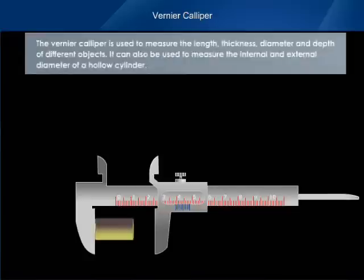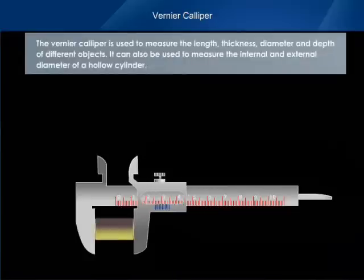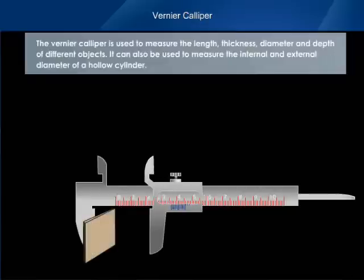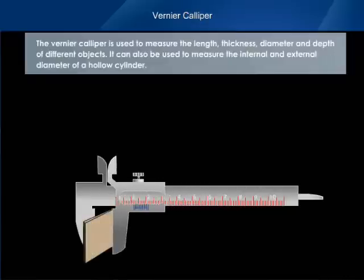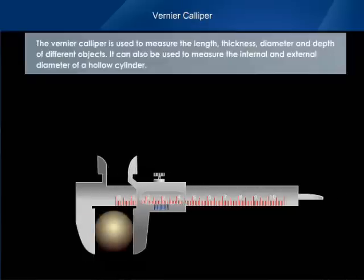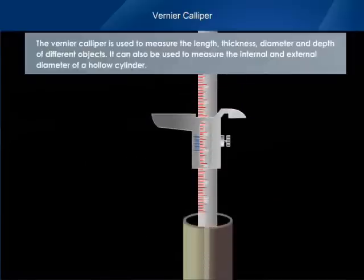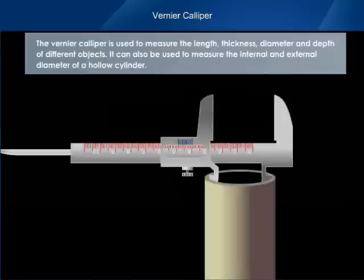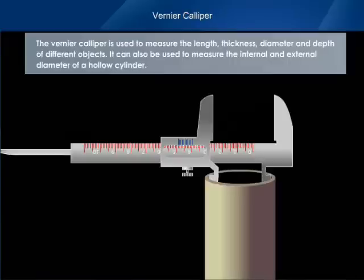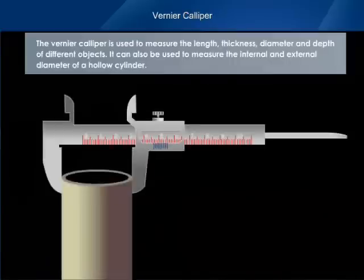Vernier caliper construction. The vernier caliper is used to measure the length, thickness, diameter, and depth of different objects.